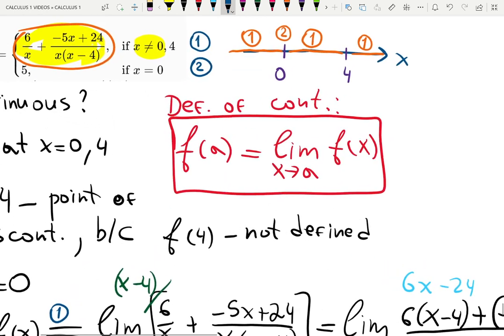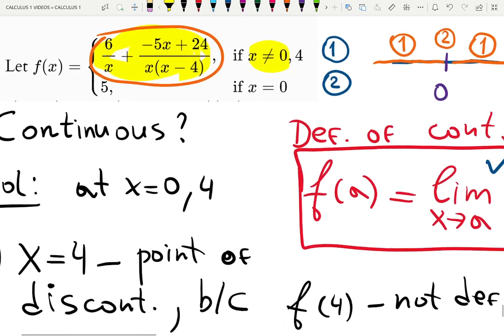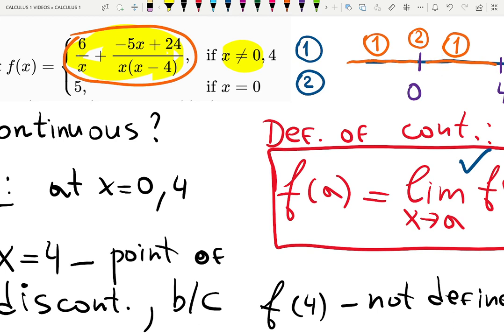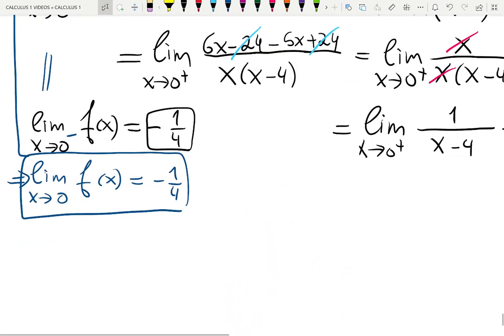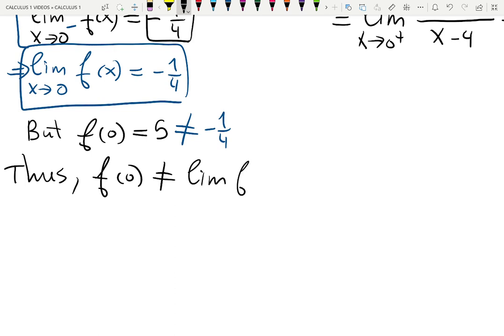So one of the parts of definition of continuity is done. We have the limit, it exists, and it is negative 1 quarter. The only thing left to check is that f at 0 is also negative 1 quarter. But is it true? What is f at 0? Let's look at the piecewise function again. f at 0 uses equation number 2, which is just a constant 5. f at 0, this function jumps, or basically has a cut-out hole, and goes up into the number 5 as the output. But f at 0 is 5, which most importantly is not negative 1 quarter. Thus, f at 0 did not meet with the limit of f of x when x approaches 0.